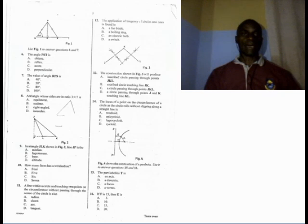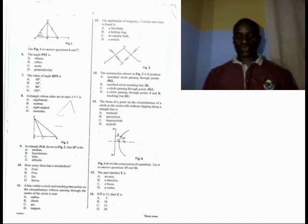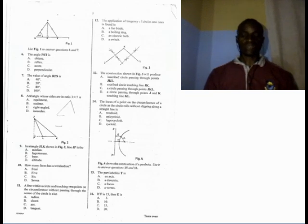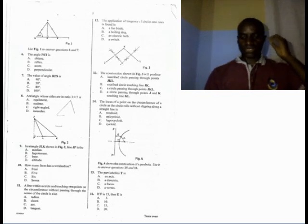Question number 8. A triangle whose sides are in a ratio 3:4:7 is — A, equilateral; B, scalene; C, right angle; D, isosceles. The answer is scalene triangle, because none of the sides are equal — that ratio tells it all.